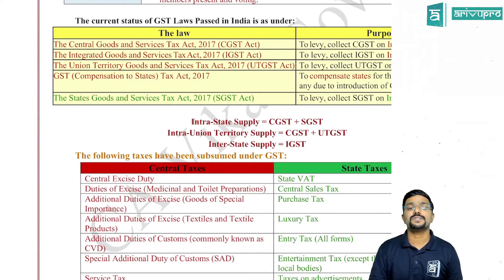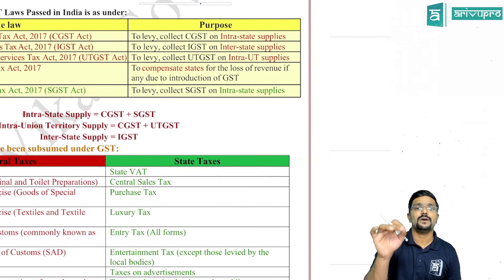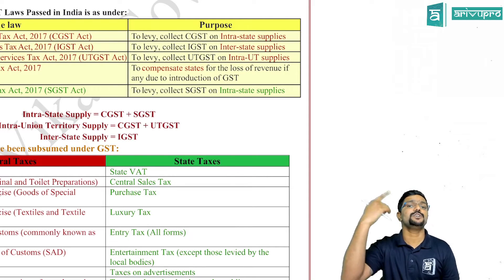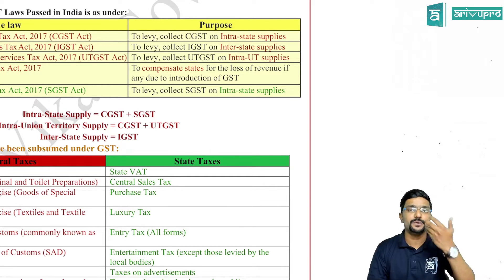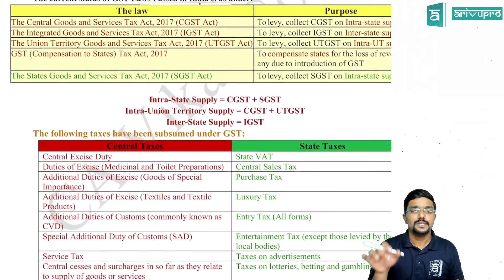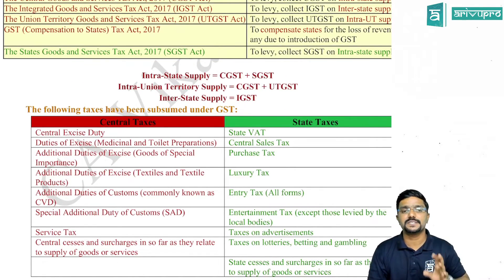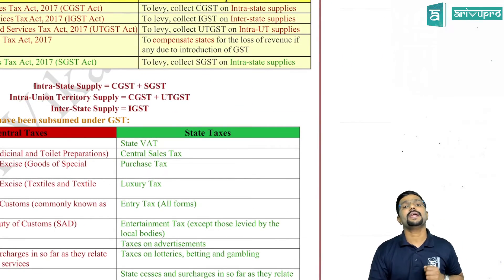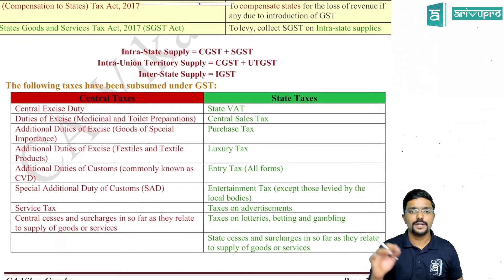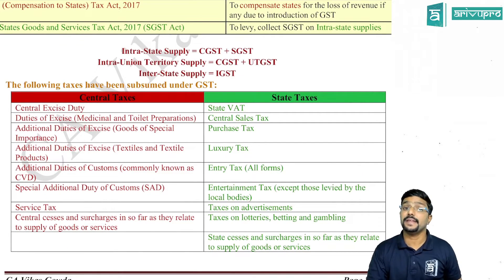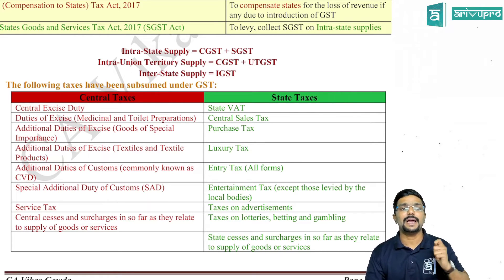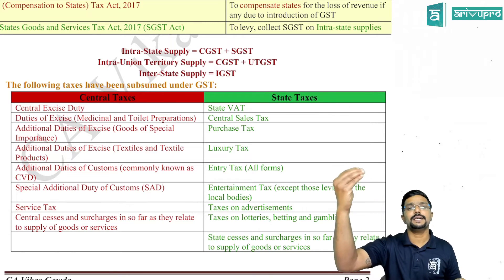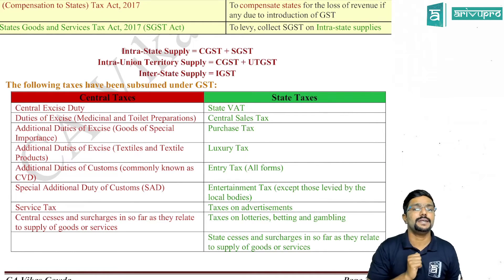The GST Compensation to States Act, 2017 levies a cess not on all goods but only on some luxury and sin goods, in addition to GST, to compensate states for any loss of revenue due to the implementation of GST. The SGST Act is passed by each and every state to levy and collect SGST on intra-state supply. In summary: on intra-state supply, CGST plus SGST are levied equally; within a union territory, CGST plus UTGST are levied equally; on inter-state supply, IGST is levied entirely by the central government — they keep half and give the other half to the destination state.